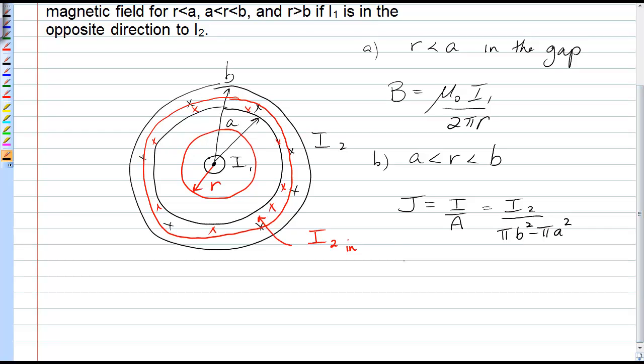Now if I just want the red portion, this is the same ratio. So I2 over pi b squared minus pi a squared is also equal to the proportion of I that's in the red Amperian circle. But now the area of that Amperian circle has r for one radius and a for the inner.